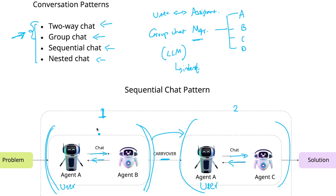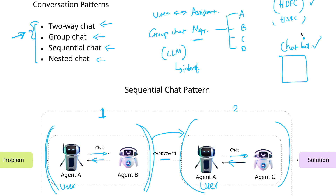Let's say we are looking at solving a specific problem — creating a chatbot for a banking system, say HDFC or HSBC bank's IT department. In this use case, when a user messages the chatbot it first routes to a specialist agent, which specializes in solving any user questions.